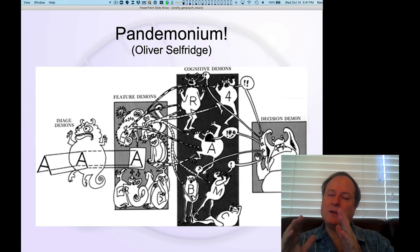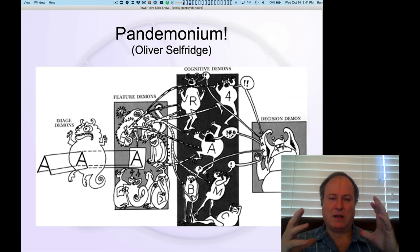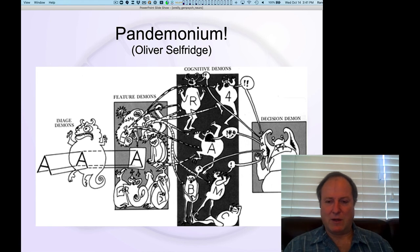But then at the next level up, you have the ability to integrate across all those different features and sort of say, oh, well, I'm getting both that kind of diagonal line up the other diagonal line and that horizontal. That must mean that an A is present in the input. And so then this cognitive demon can fire. And in this in-class demonstration, you just have people shouting. It's kind of chaos. And then the upper level beyond that is some kind of decision demon that's trying to integrate across all those signals and see who's shouting the loudest and therefore who, what feature might actually be out there in the real world.